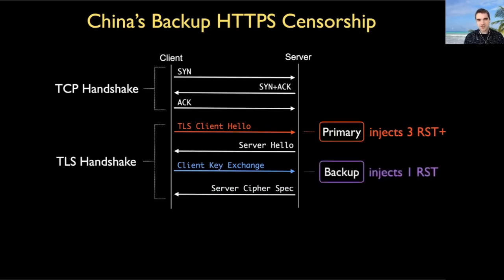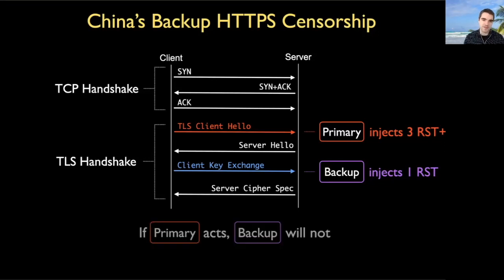What's most interesting about these two middleboxes is there seems to be some crude interaction between them. Specifically, when the primary middlebox injects three reset packets, the backup will ignore the rest of the connection — even if those reset packets fail to tear down the connection. Said another way, if the primary takes action, regardless of the result of that action, it prevents the backup from taking any action at all.